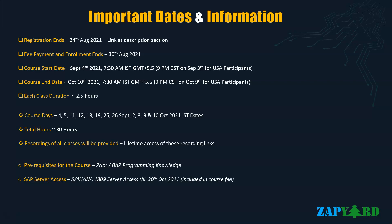The link to enroll for this training is in the description section of this video. Each class will be around 2.5 hours and the whole course will be around 30 hours, with a total of 12 classes. Recordings will be provided after every live session and participants will have lifetime access to these recordings. S/4HANA 1809 server access will be provided until October 31st, 2021 and is included in the training fee — no extra payment required. Please check the description section of this video for the course fee and other details.